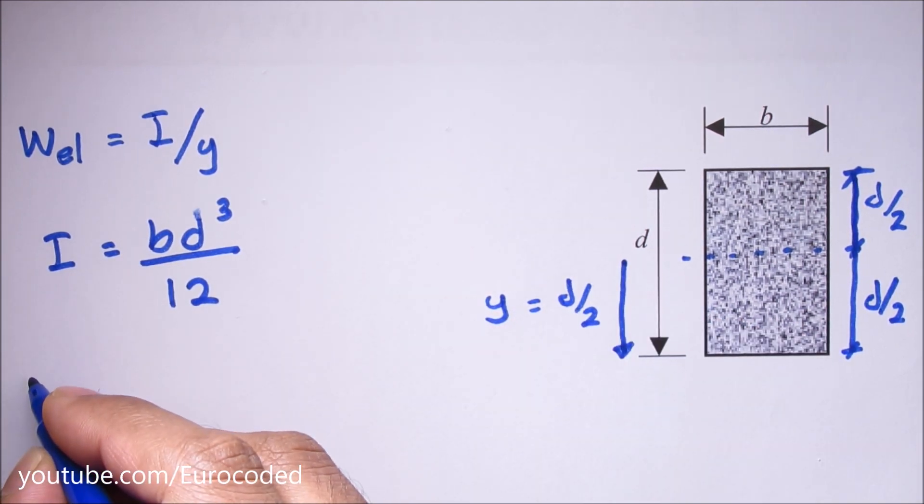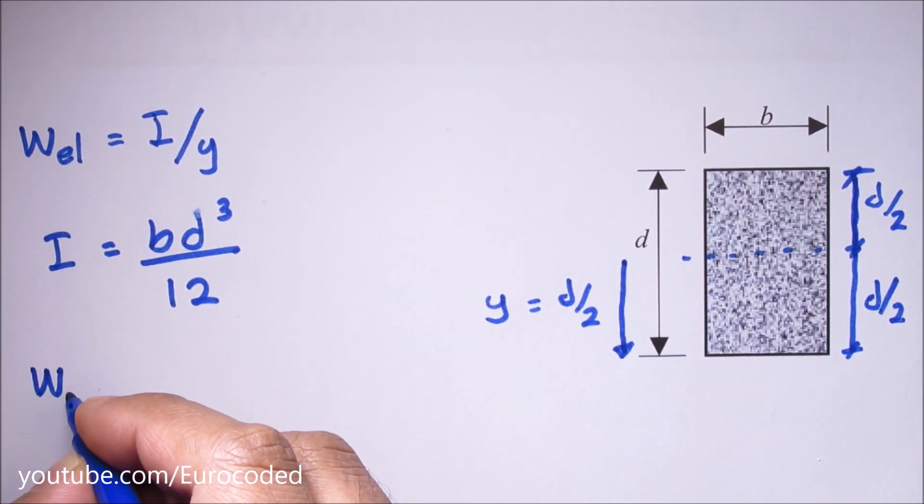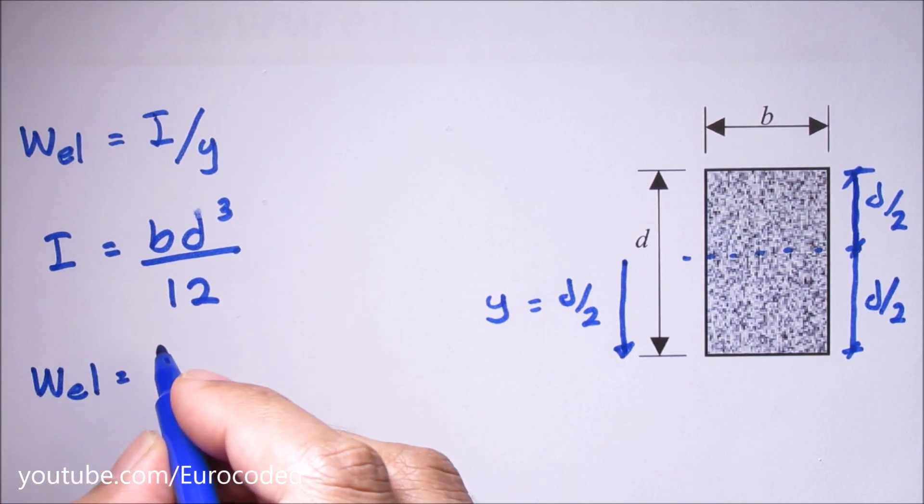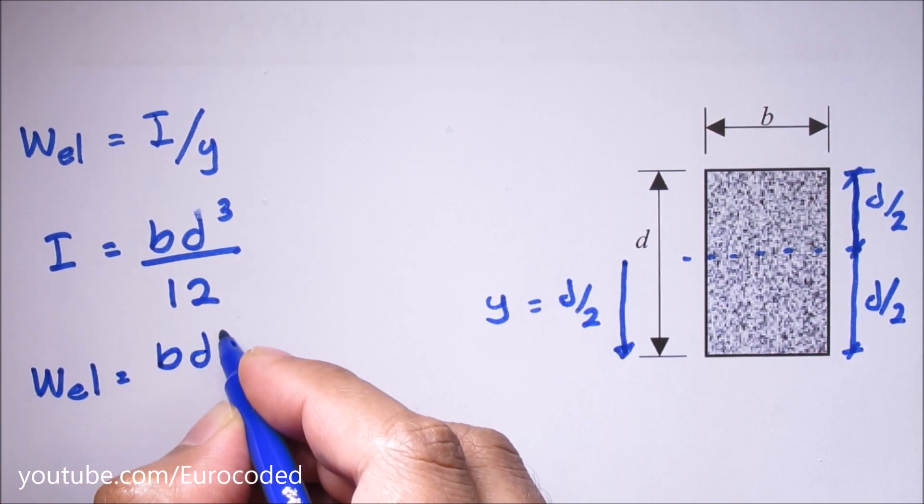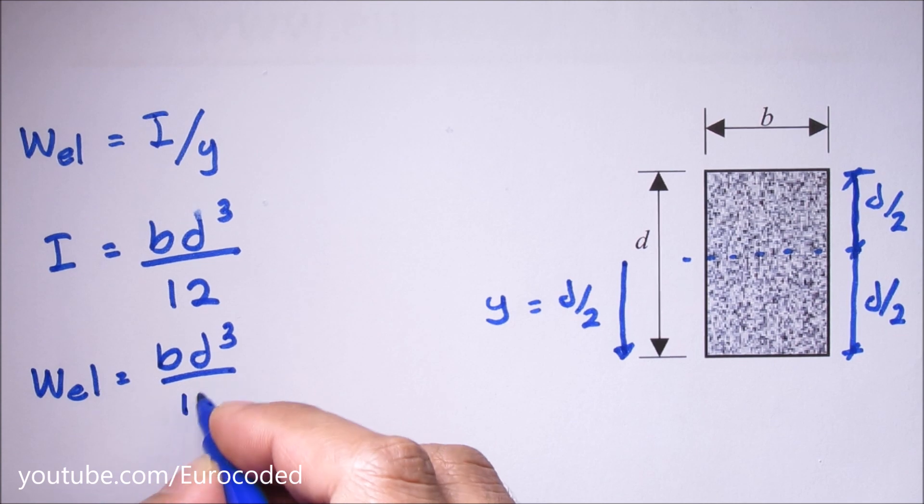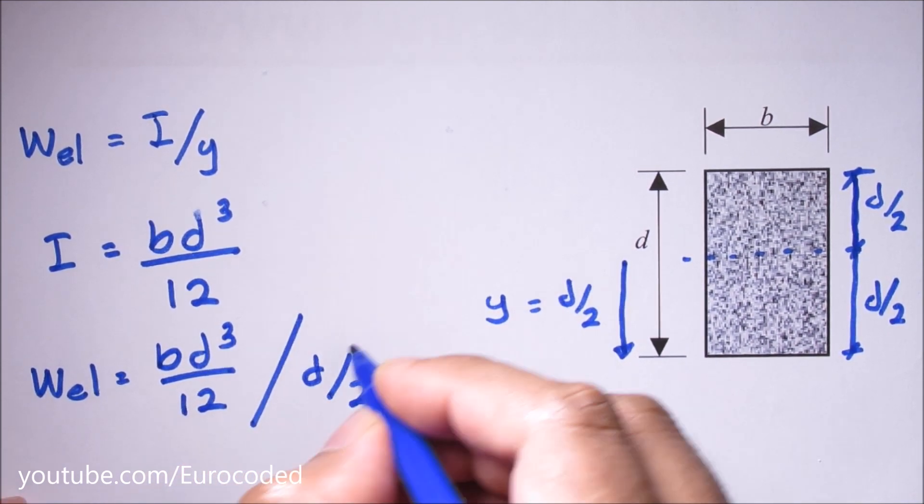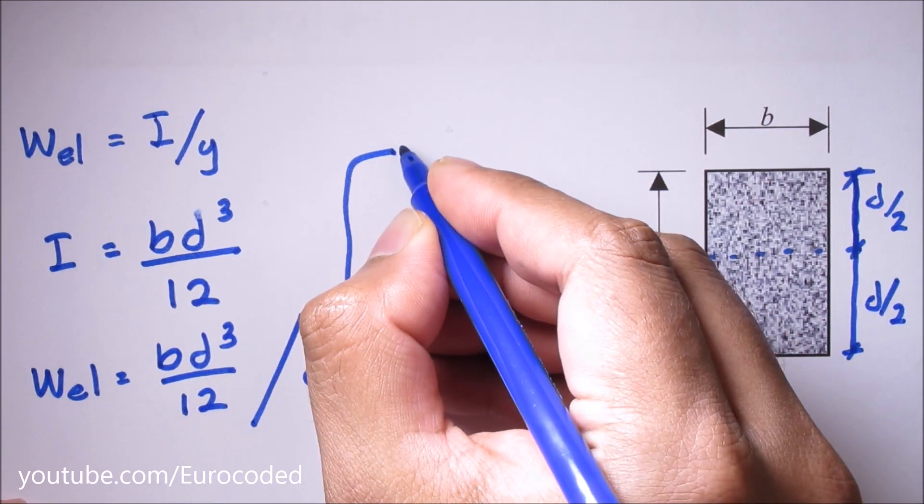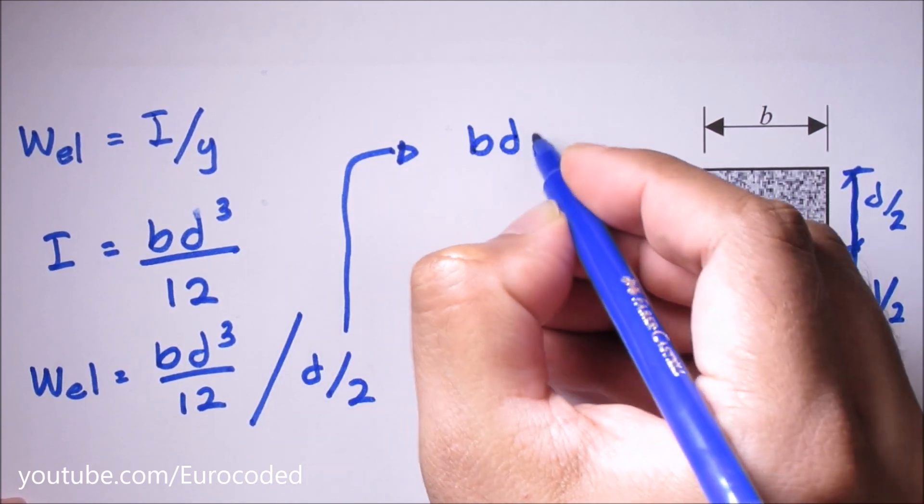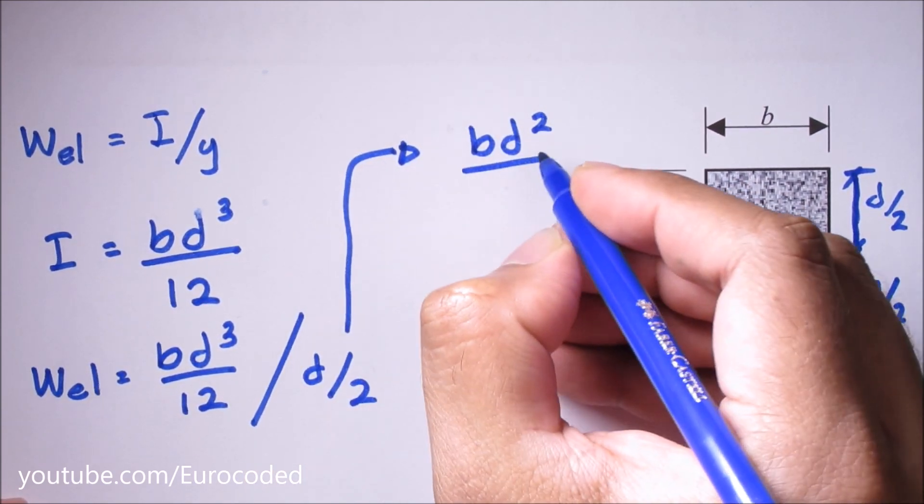So we can write for the bottom fiber W_EL is equal to bd³ over 12, over d over 2. And this comes to bd² over 6.